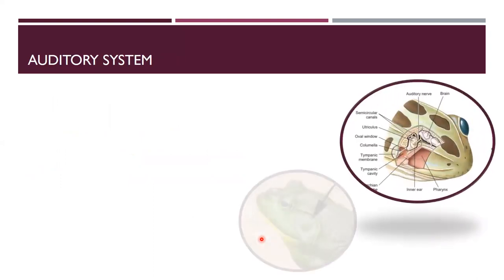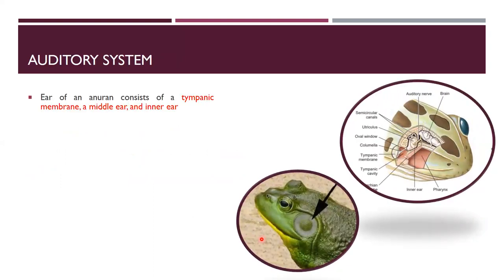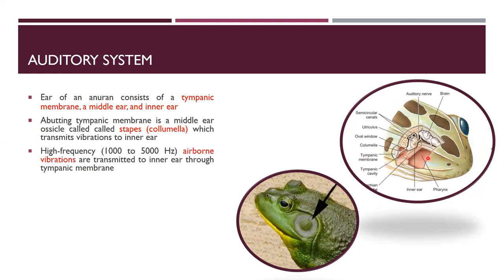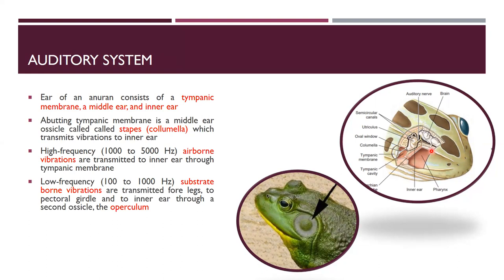The ear of an anuran consists of a tympanic membrane externally, a middle ear, and an inner ear. Abutting the tympanic membrane is a middle ear ossicle called the stapes or columella, which transmits vibrations to the inner ear. High-frequency (1,000–5,000 Hz) airborne vibrations are transmitted through the tympanic membrane. Low-frequency (100–1,000 Hz) vibrations are transmitted via the forelimbs, then to the pectoral girdle, then to the inner ear. The inner ear has semicircular canals that help detect rotational movement.